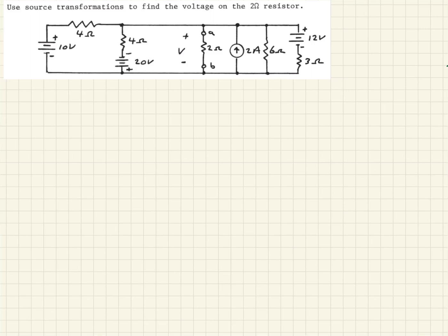This is an interesting example where they want us to use Thévenin analysis, but don't outright say it. What they've asked us to do is use source transformation to find the voltage on the two-ohm resistor. Here's the two-ohm resistor, and you can see they show terminals A and B. So what they really want us to do is find the Thévenin equivalent between A and B, then use two ohms as the load resistor to determine the voltage on it.